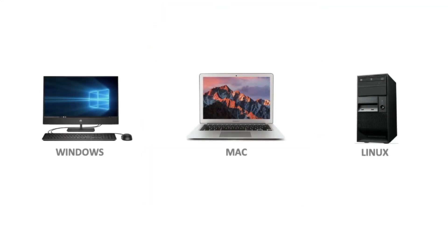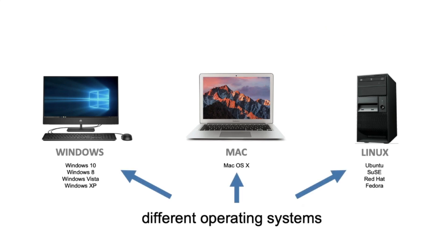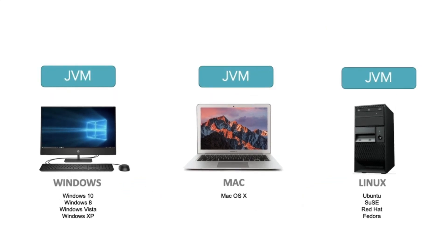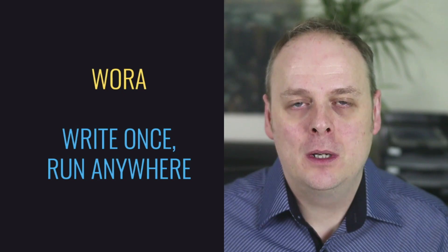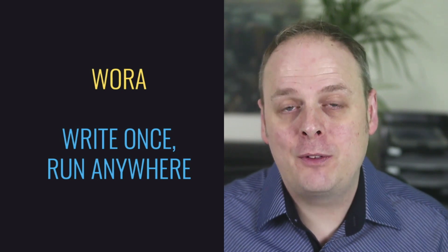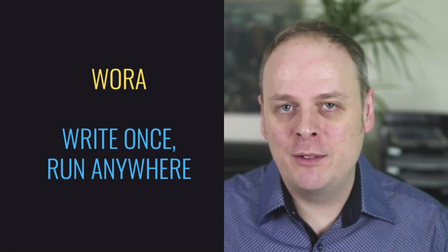Going back to the three computers we saw before - Windows, Mac, and Linux - each has different operating systems. On Windows you might have Windows 10, Windows 8, Windows XP. On a Mac you'll have Mac OS X. On Linux servers you'll have something like Ubuntu, SUSE Linux, Red Hat, or Fedora. But the key point is that each of these operating systems has a JVM available for it - a JVM for Windows, a JVM for Mac, a JVM for Linux. Because of this, the Java program you write can run on each one of these machines. You can write your Java application on a Mac and run it on Windows, or write it in Linux and run it on the other two. That's the power of Write Once Run Anywhere.